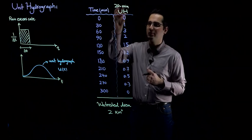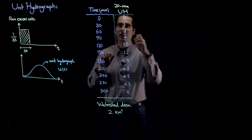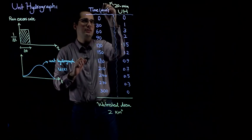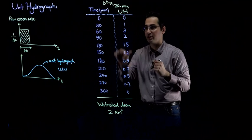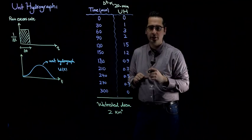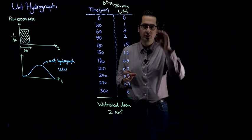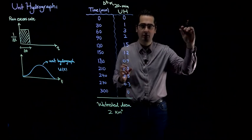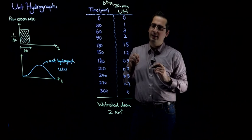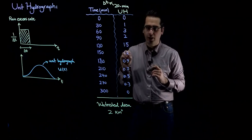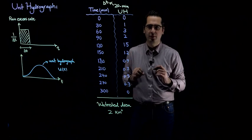In this problem, we have the 20-minute unit hydrograph. When I say 20-minute unit hydrograph, it means that delta T is equal to 20 minutes. These are the ordinates of the unit hydrograph for this 20-minute unit hydrograph. What we are going to do in Part A is to verify if this hydrograph given to us is a unit hydrograph.